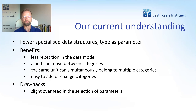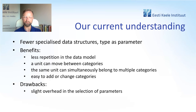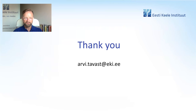This one data item — not two data items of the same form — makes it easy to add or change categories. If we don't have to change the data model for adding a new multi-word expression type, then it's easier to add one. The only drawback we can think of is that there will be slight overhead in the selection of parameters — for instance, if collocations require some particular parameter that is not used for other types of multi-word expressions, then those other types will simply not use that parameter. But that's not a big problem as far as we can see. So thank you very much for listening, and I'm looking forward to the discussion.